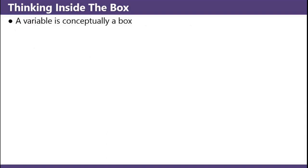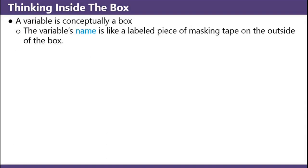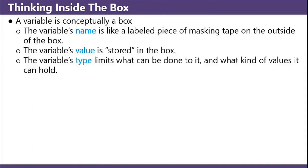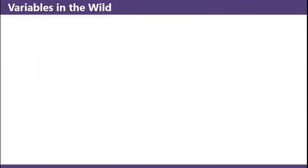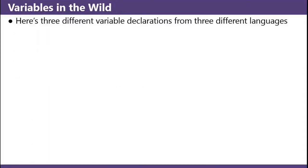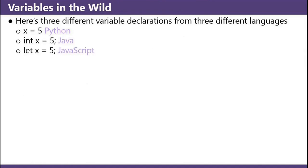The variable's name is like a labeled piece of masking tape on the outside of the box. The variable's value is stored in the box. The variable's type limits what can be done to it and what kind of values it can hold. The variable's address is where it is stored in memory. Here are three different variable declarations from three different languages: x equals 5 in Python, int x equals 5 in Java, and let x equals 5 in JavaScript.